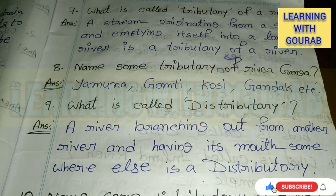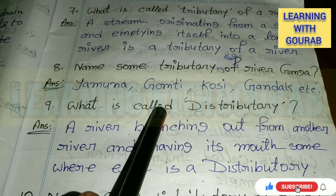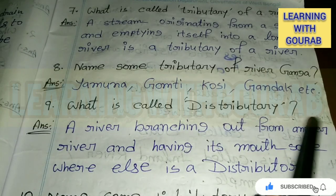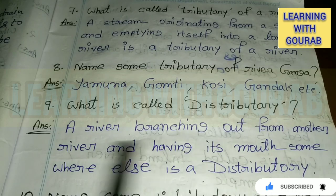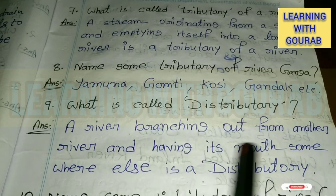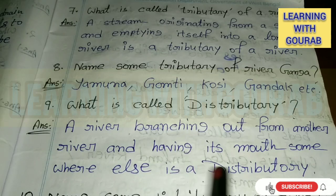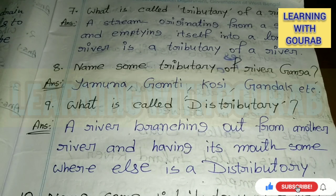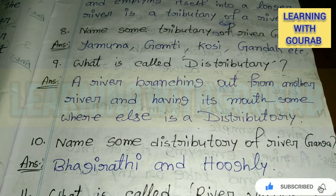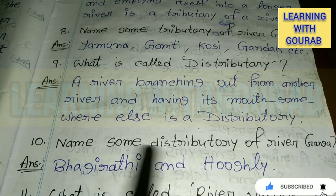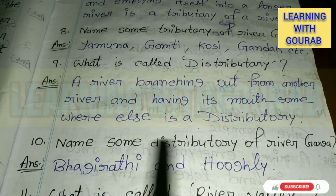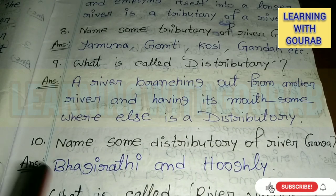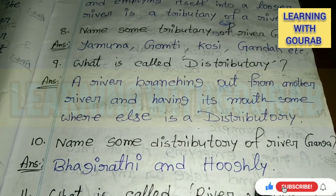Next: What is called a distributary of a river? Answer: A river branching out from another river and having its mouth somewhere else is a distributary. Name some distributaries of river Ganga. Answer: Bhagirathi and Hugli.